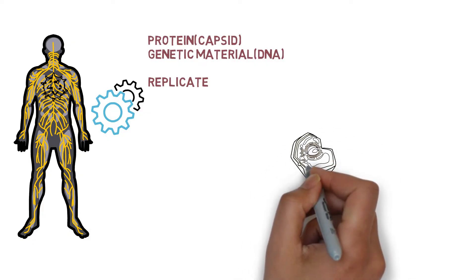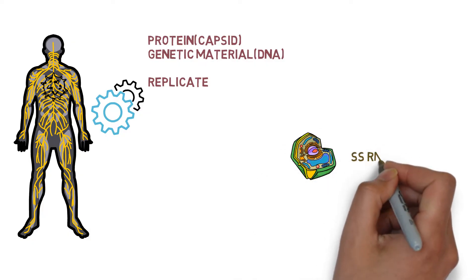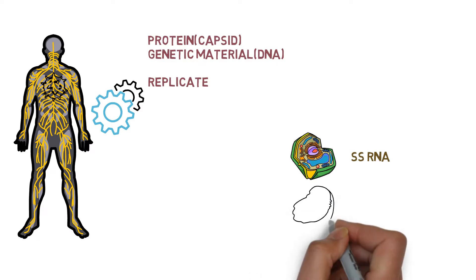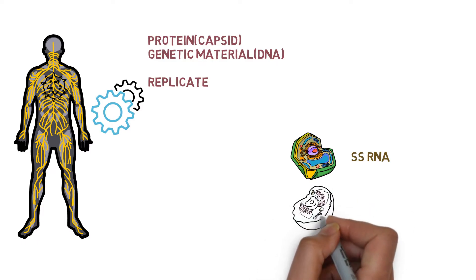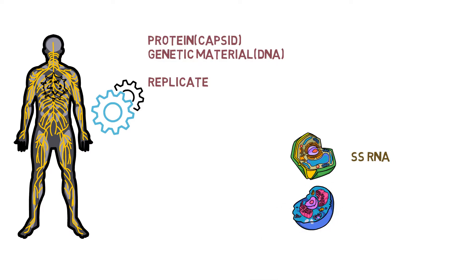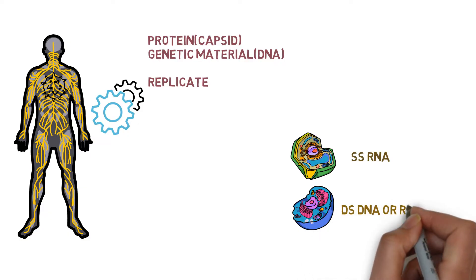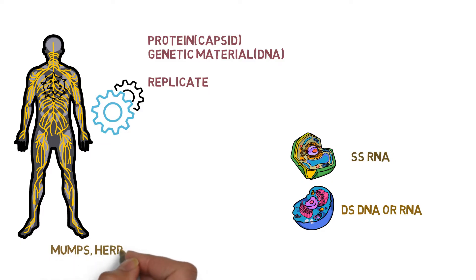Viruses that affect plants are generally single-stranded RNA, meaning only RNA is present. The viruses that affect animals or other organisms such as bacteria are generally double-stranded DNA or RNA, though they can also be single-stranded DNA. These viruses are able to spread different diseases.